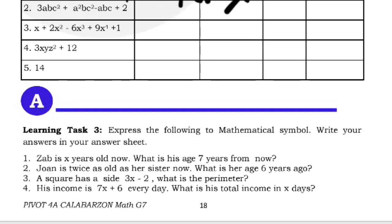Learning Task 3: express the following in mathematical symbols. Number 1: Zab is x years old now — what is his age 7 years from now? If Zab is x years old now and is currently 10, in 7 years he will be 17, so we just add 7. The mathematical expression is x + 7. Please answer numbers 2, 3, and 4 by applying what you've learned. That's it for this video — thank you for watching and see you next time.